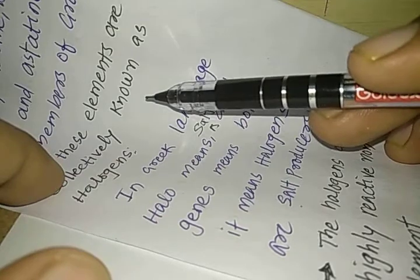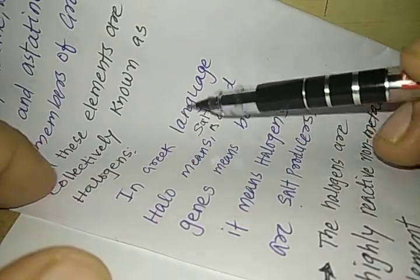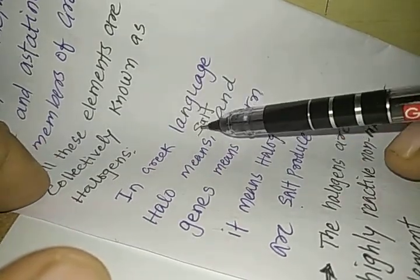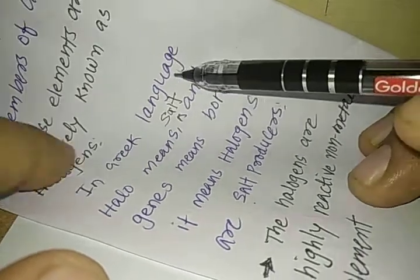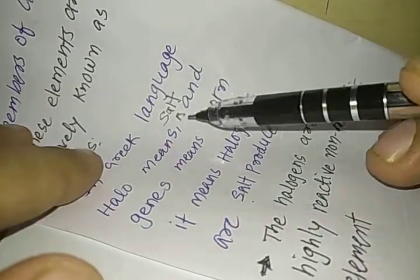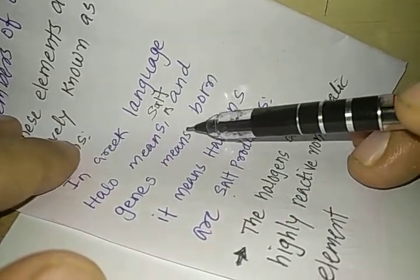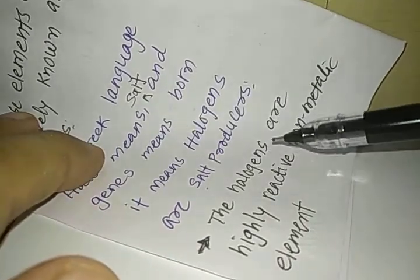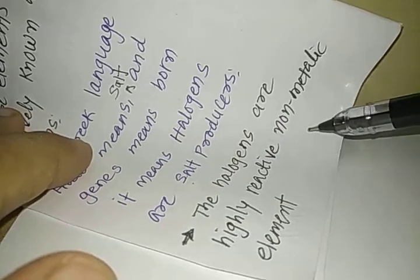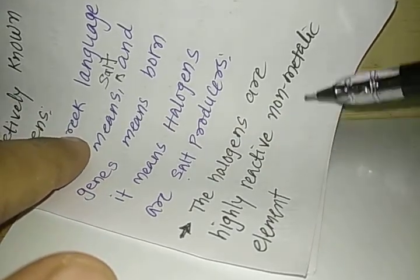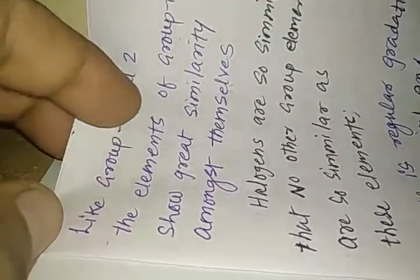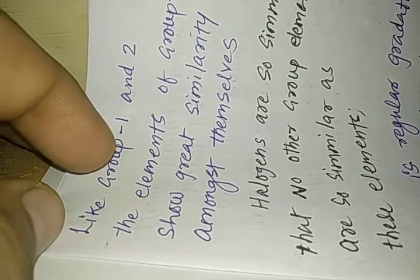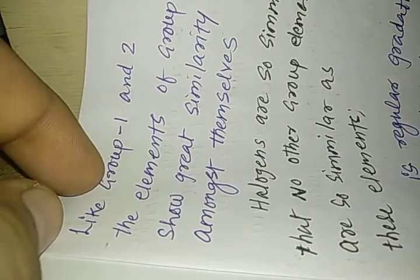These elements are the producers of salt. From these elements, salts are produced, and that is why the word halogen has been decided for these elements. The halogens are highly reactive non-metallic elements. Please remember all the elements present in Group 17 are non-metallic. No element is a metal. Astatine is a radioactive element.